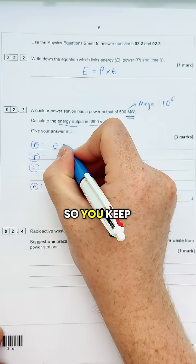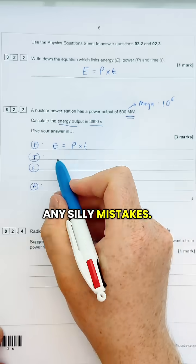So formula first - just write it down again so you keep track of your numbers and don't make any mistakes. Insert your values.